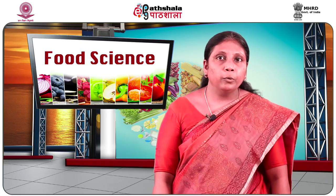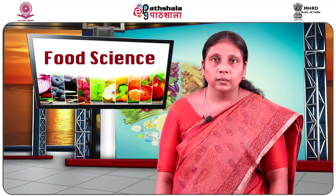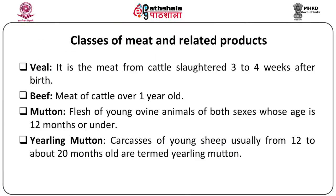Now I am going to talk about the different classes of meat. Veal and beef are obtained from cattle. Veal is the meat of cattle slaughtered between three to four weeks after birth, so it is the meat of the young calf. Beef is the flesh or meat of cattle which is over one year old.